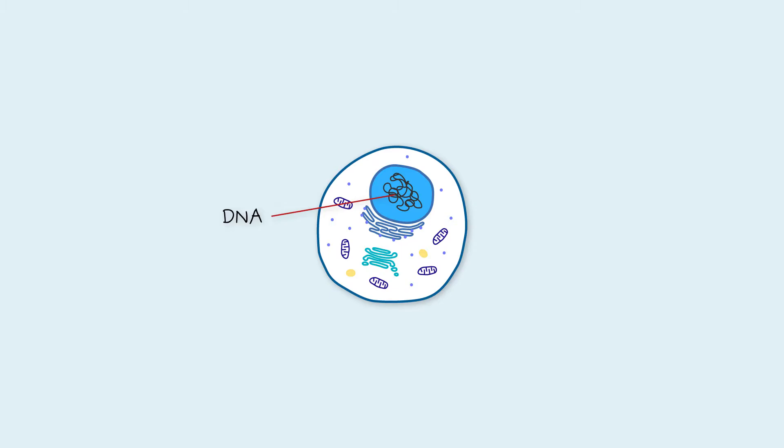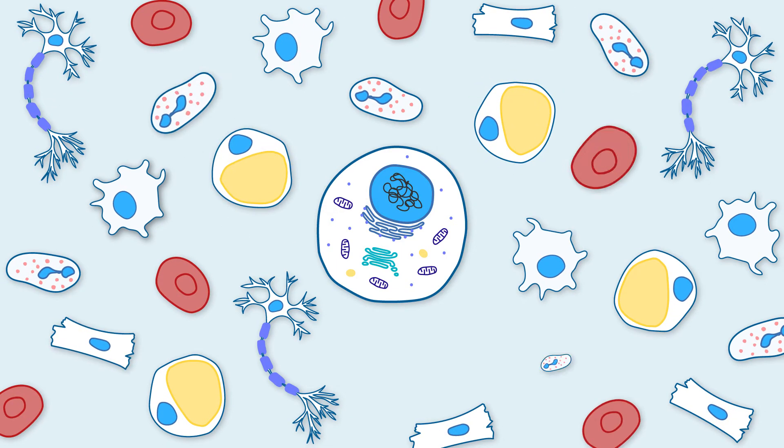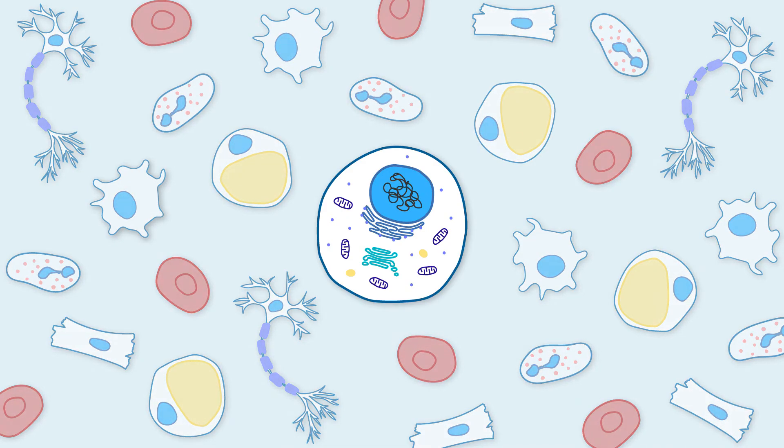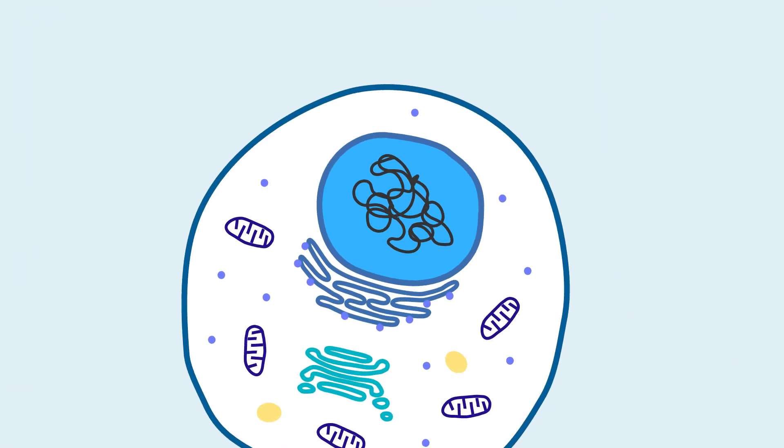But even though it's identical in every cell, it can still make cells with all different kinds of functions. This is because different cells can make different sets of proteins. Let's look at how proteins are made and some of the things they do.